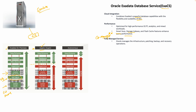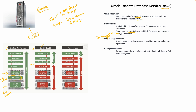ExaCS is a co-managed service - Oracle is responsible for the infrastructure layer while the customer is responsible for the top layer. Oracle manages infrastructure patching, backup, recovery, and all operations. Just like on-prem Exadata, ExaCS comes in various deployment options: you can choose a quarter rack, half rack, or full rack. A full rack has eight database servers and twelve storage servers; a half rack has four database servers and six storage servers.